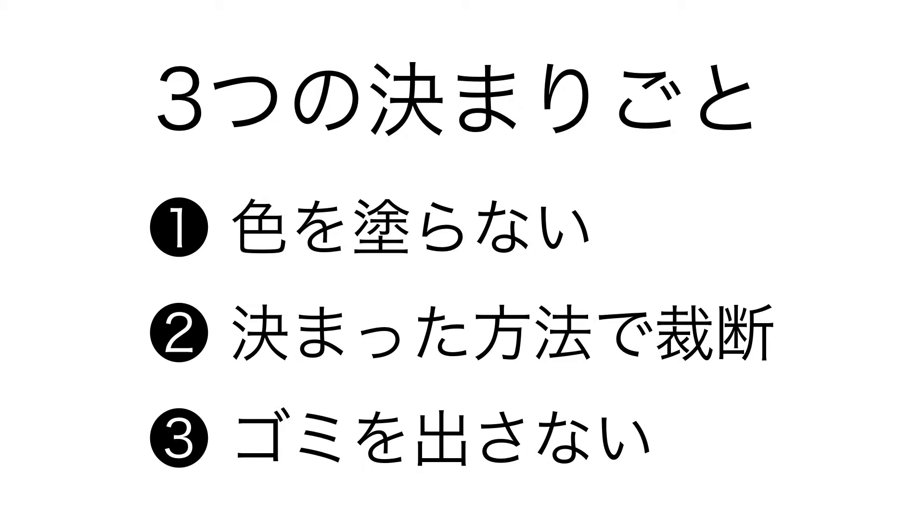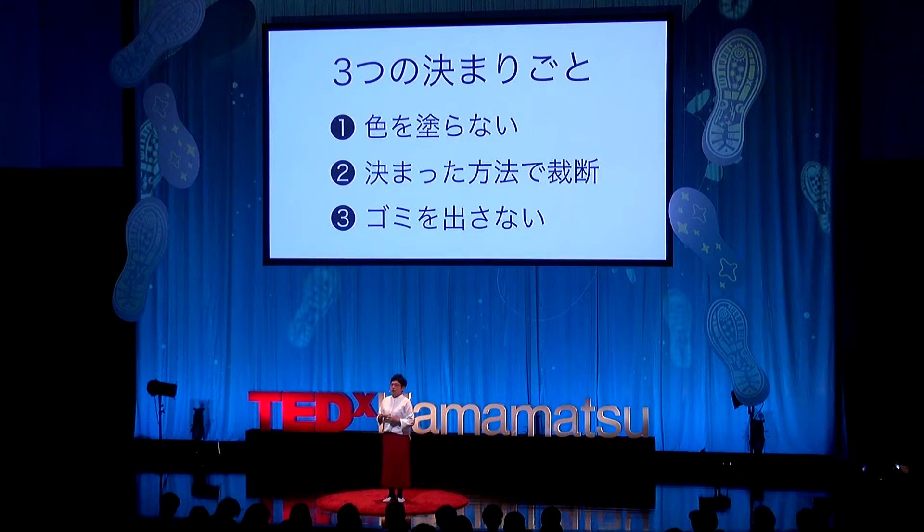芯はカットしてつなげるんですけれども、そのカットした芯をつなげるために使っているのは、市販で販売しているグルーガンというプラスチックみたいなのを溶かして溶接するものを使っています。私のアート創作には3つの決まり事があります。1つ目は芯に色を塗らないということ。